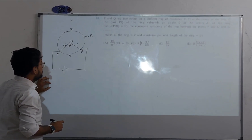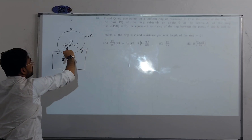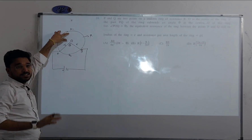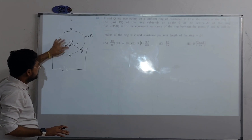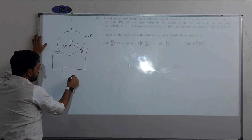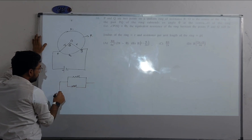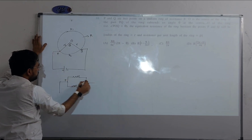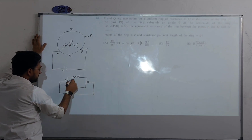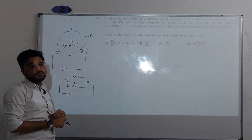The next task is to simplify the circuit. The total resistance R of the ring is distributed into two parts: one on the major arc (R1) and one on the minor arc (R2). The simplified circuit has R1 and R2 connected between points P and Q, and we can observe that these two resistances are in a parallel combination.